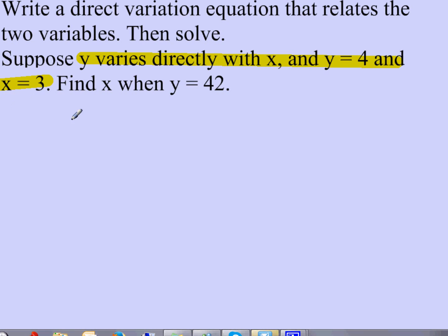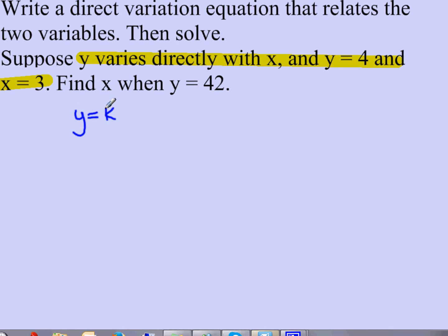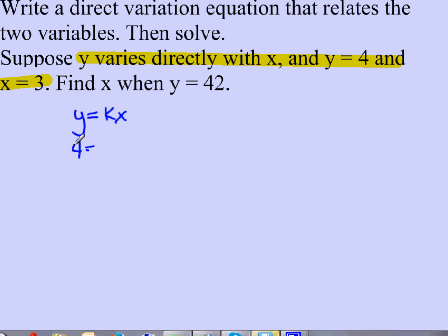So then I have the same equation I've been working with for direct variation, y equals kx. I know that y is 4, k is what I need to know, and x is 3.